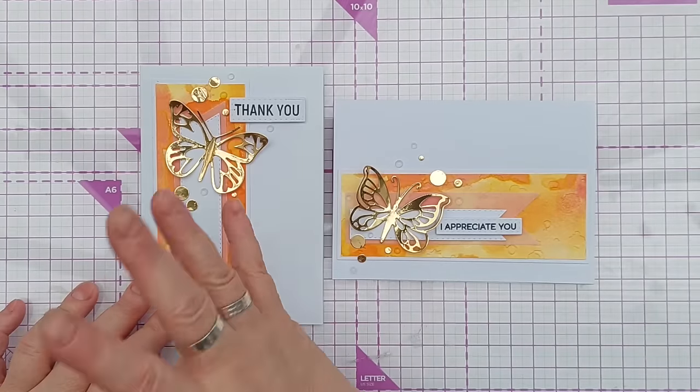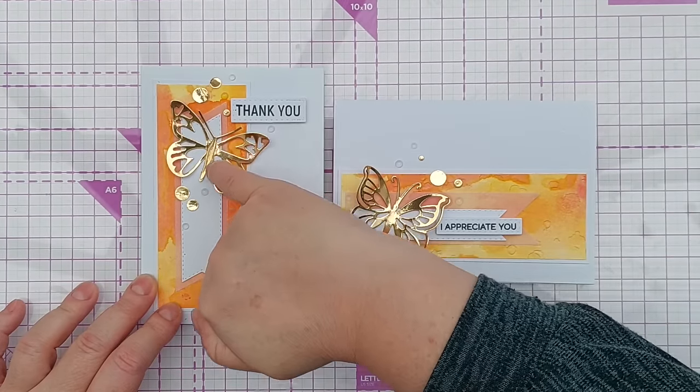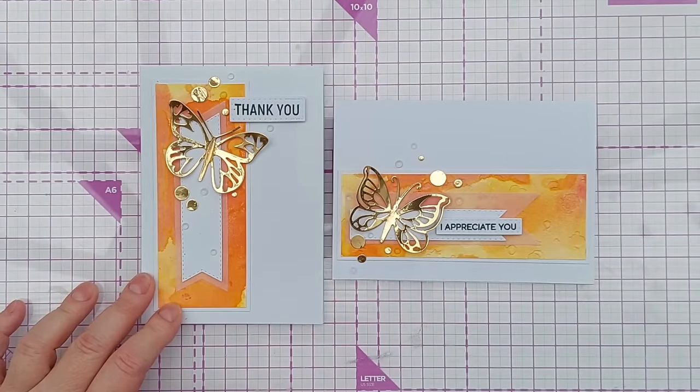I also added some gold foil with some morning dew crystal drops from Nouveau. These dry clear so they look a bit like dew or raindrops. I also added some on the body of the butterfly here to give the body a bit of dimension.